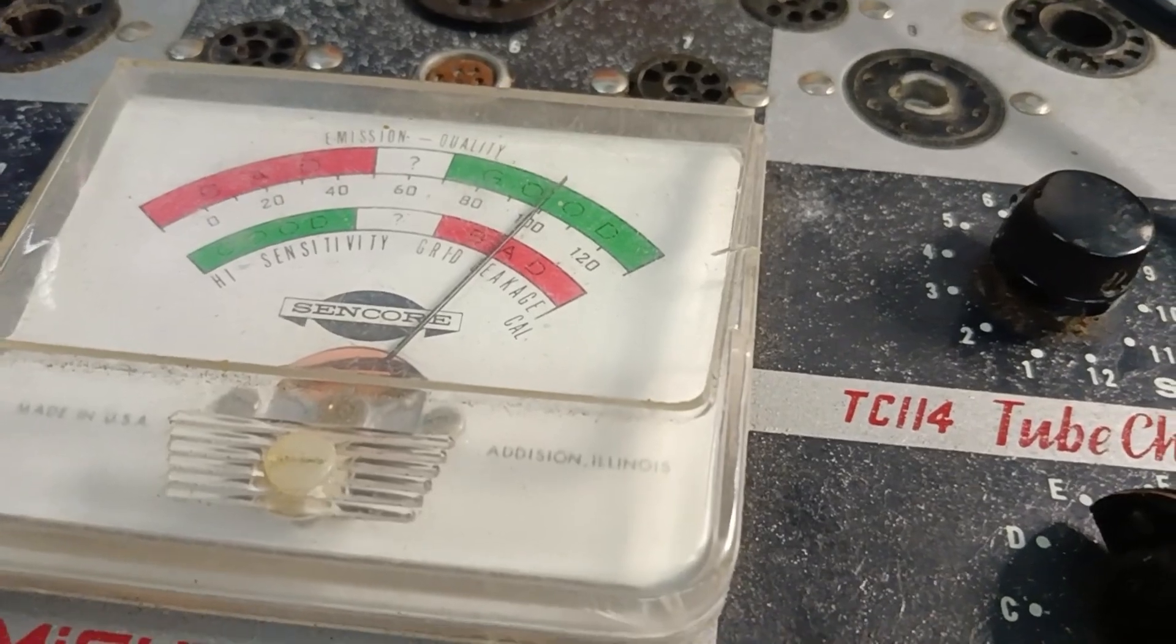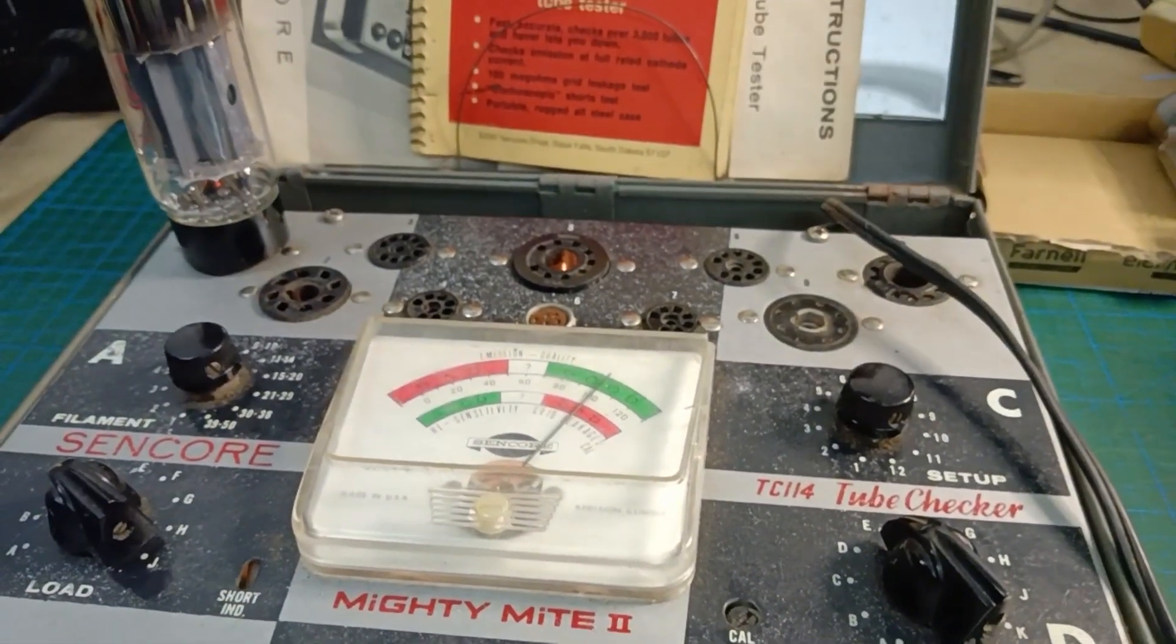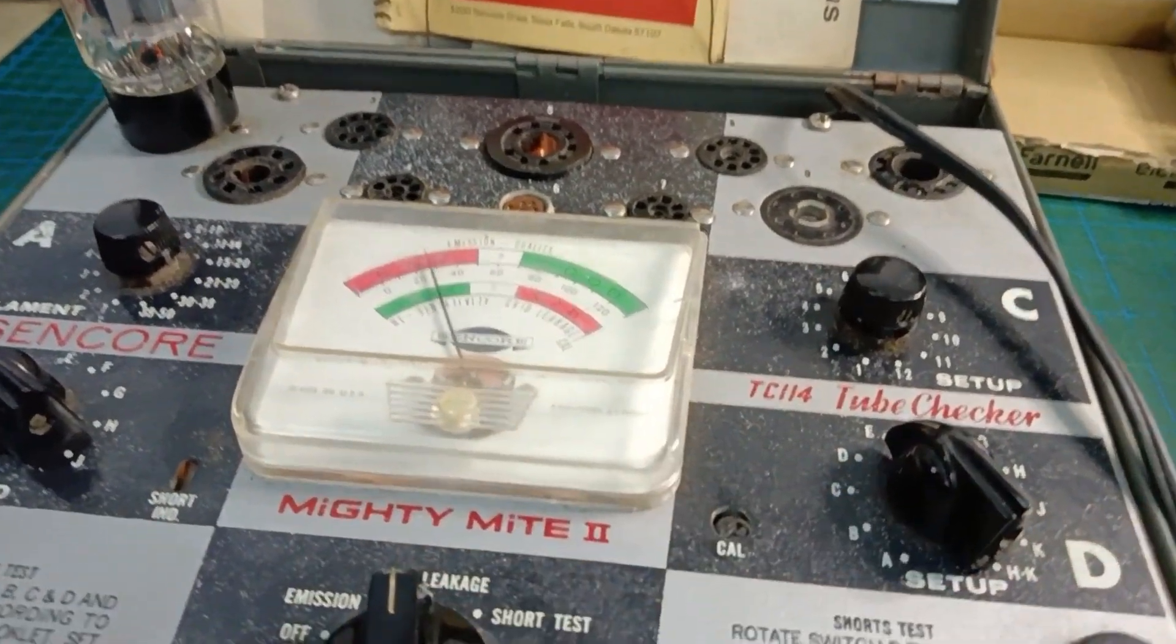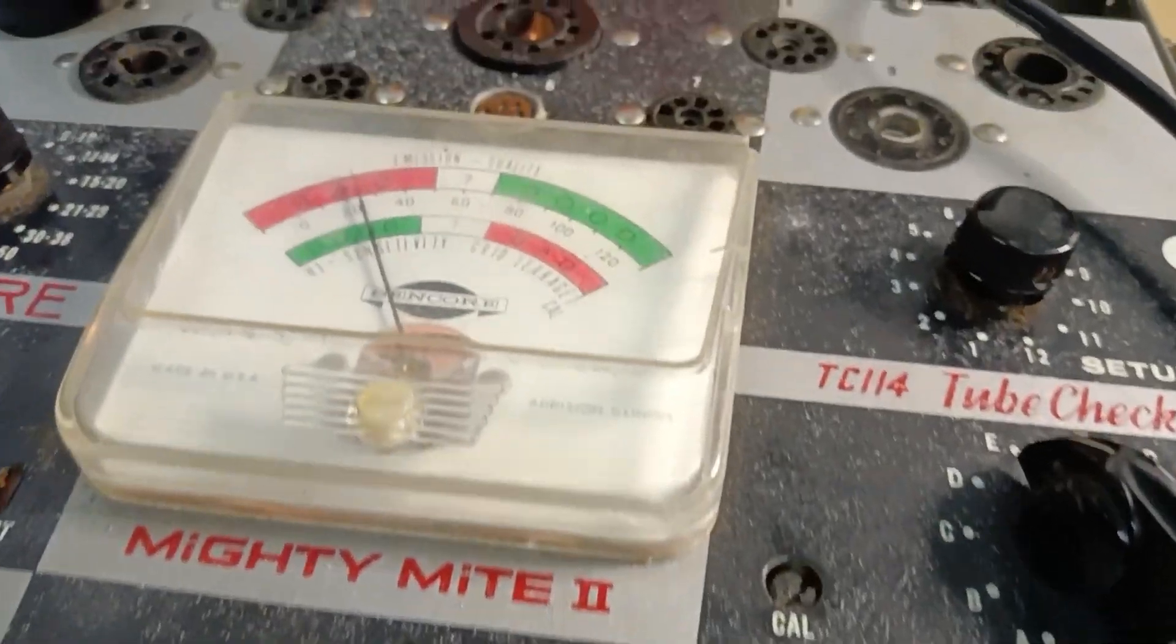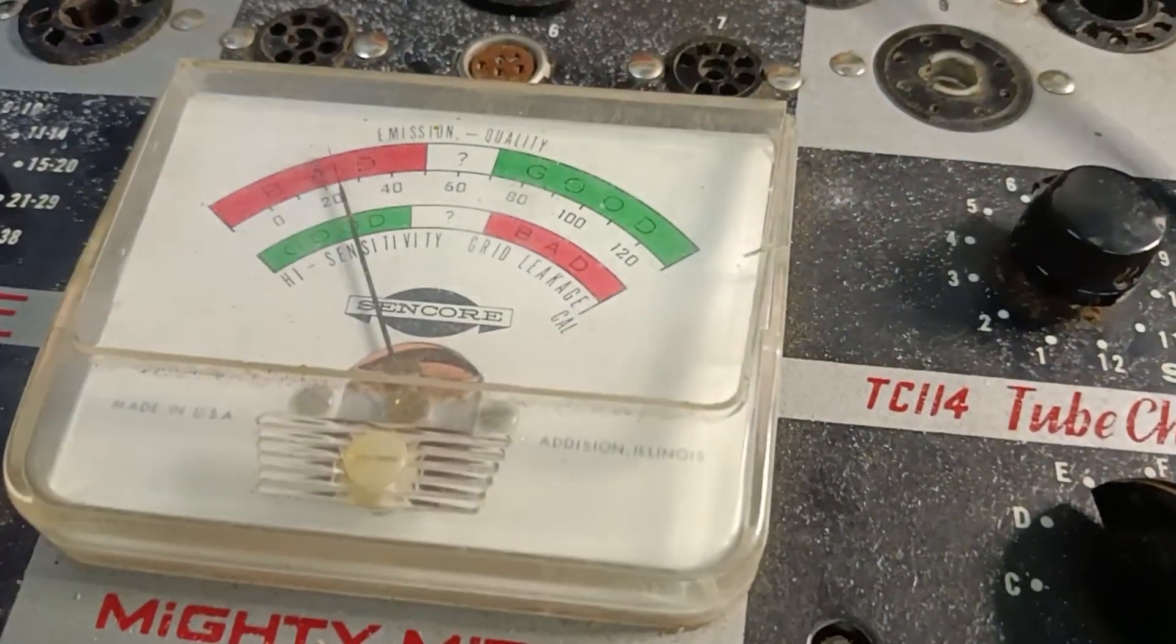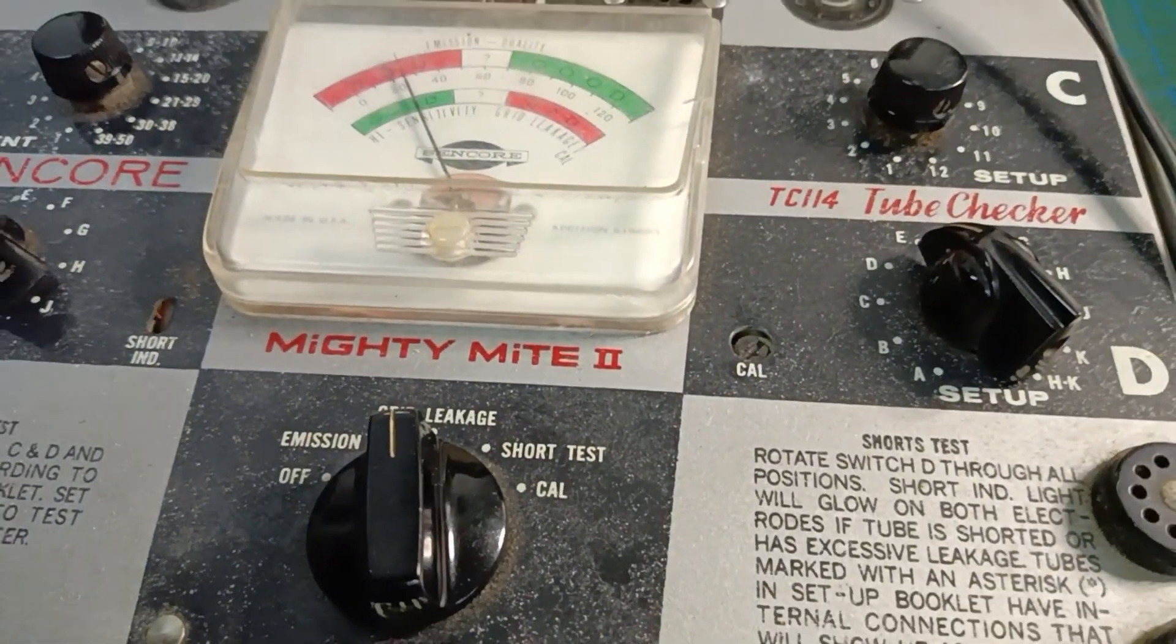This first tube tests good. You can see the meter points to the green area on the top row. Now it points to the green area on the second row. Watch till the end. I will explain more in detail regarding the tests.